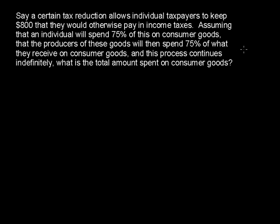Say a certain tax reduction allows individual taxpayers to keep $800 that they would otherwise pay in income taxes. Assuming that an individual will spend 75% of this on consumer goods, that the producers of these goods will then spend 75% of what they receive on consumer goods, and this process continues indefinitely — what is the total amount spent on consumer goods?